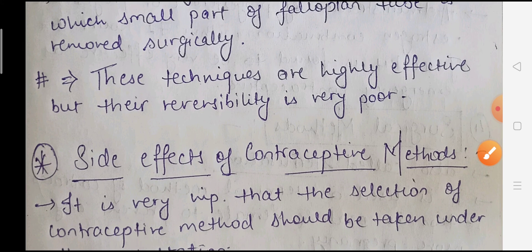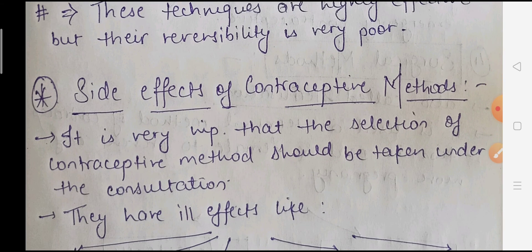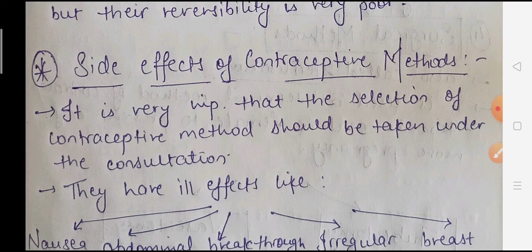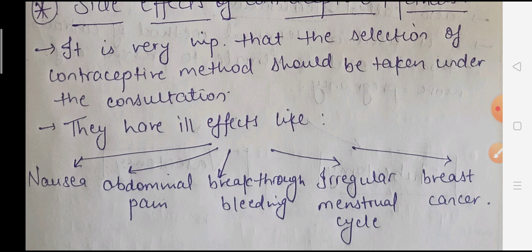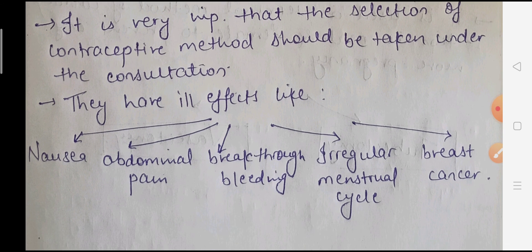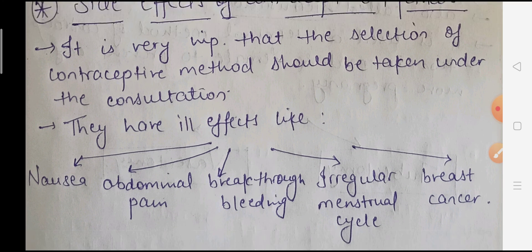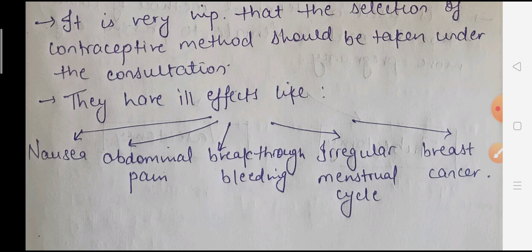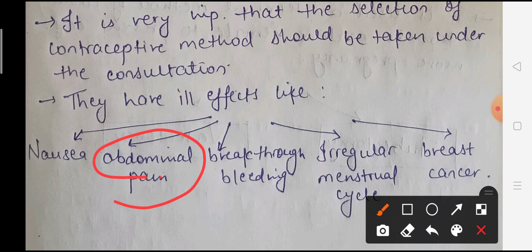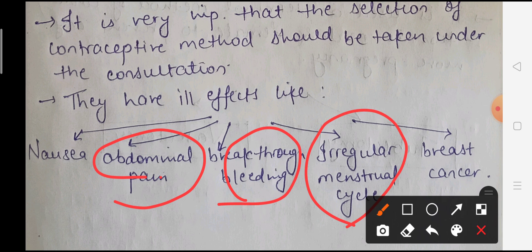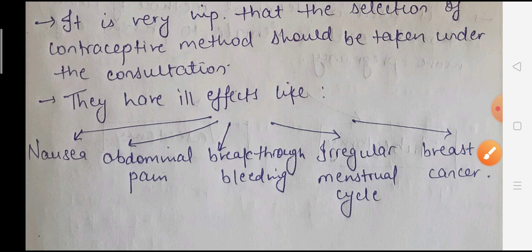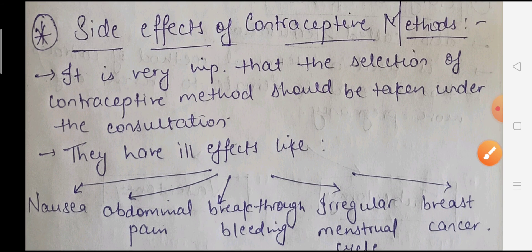Regarding side effects of contraceptive methods, it is very important that the selection of a contraceptive method should be done under medical consultation. These methods do have ill effects. The side effects include nausea, abdominal pain, breakthrough bleeding, irregular menstrual cycle, and in some cases breast cancer.